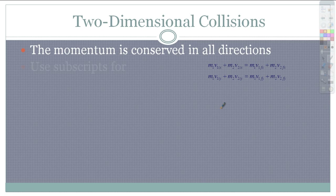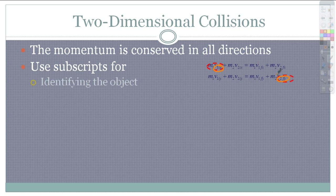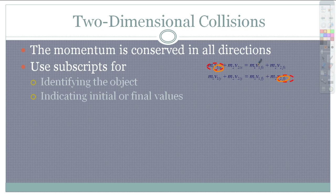Momentum is conserved in all directions, so we have to use subscripts. Don't just put V1 initial — put V1 initial in the x-direction. They're useful for identifying which object we're talking about: all V1's go with M1, all V2's go with M2. The i's and f's indicate initial or final values. After these guys hit, they might have a velocity in the x-direction and a velocity in the y-direction. If you're asked for total velocity, it's going to be the hypotenuse — so we're still using vectors and trig.